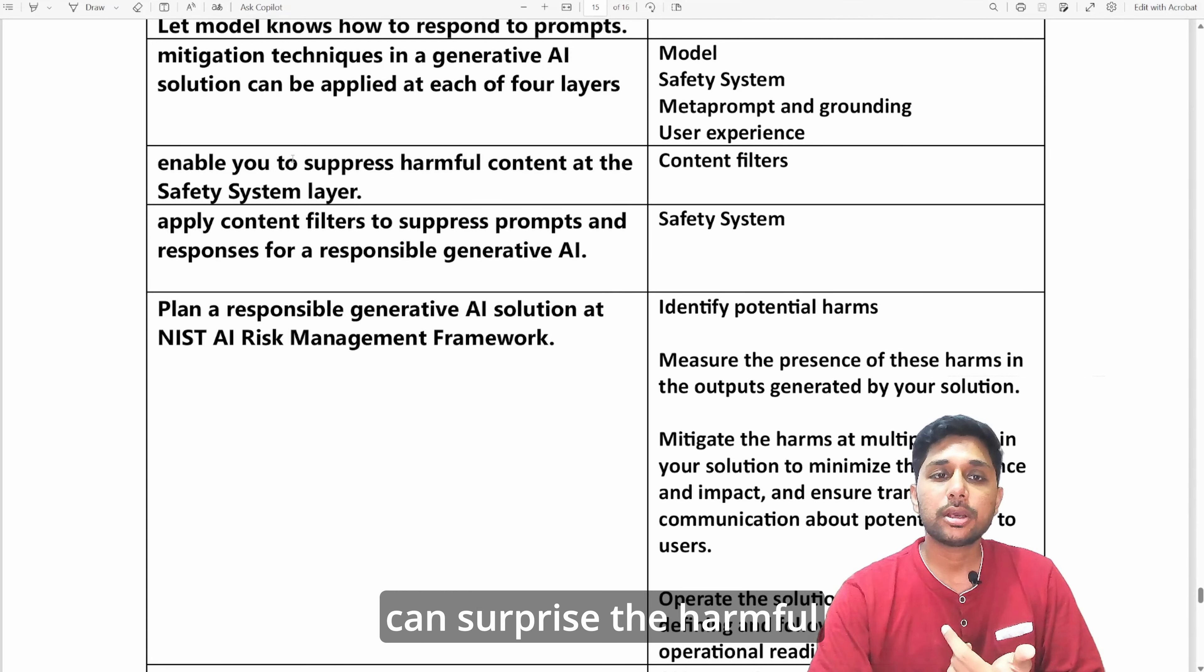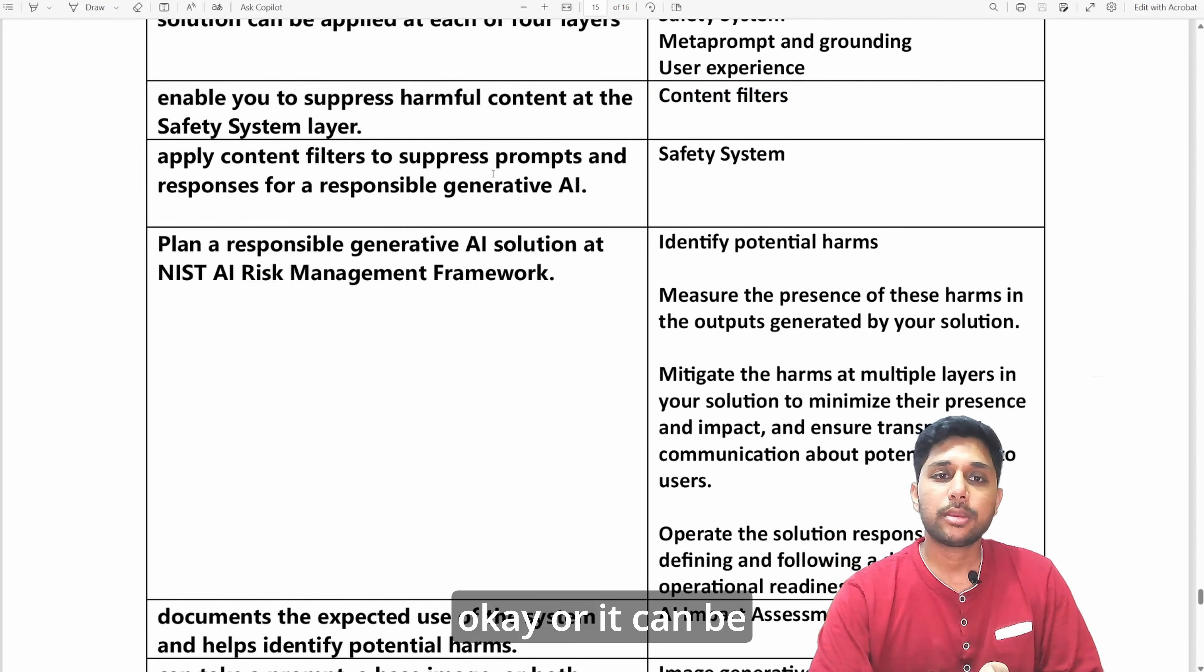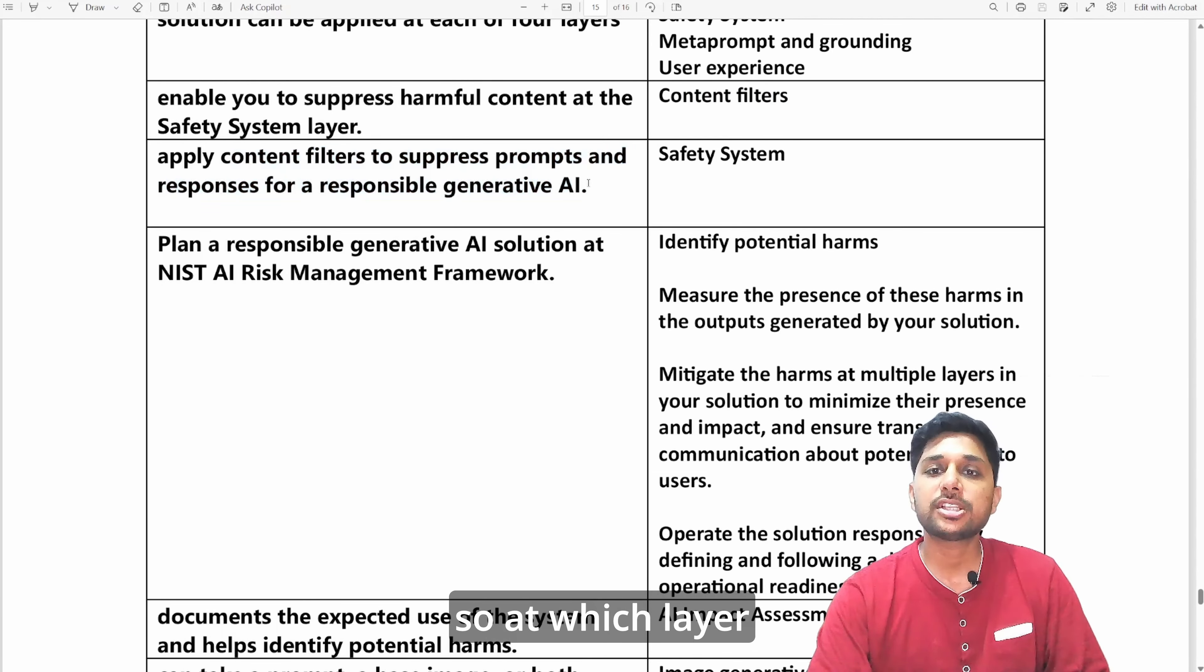You need to remember all these four layer names at least in perspective of AI 900 exam. Also it can be asked how you can suppress the harmful content at the safety system layer, so you can utilize content filters at that. Or it can be reversed also, can be asked if you apply content filter to suppress prompts, at which layer you will do that? I will do it at the safety system layer out of all these four layers.